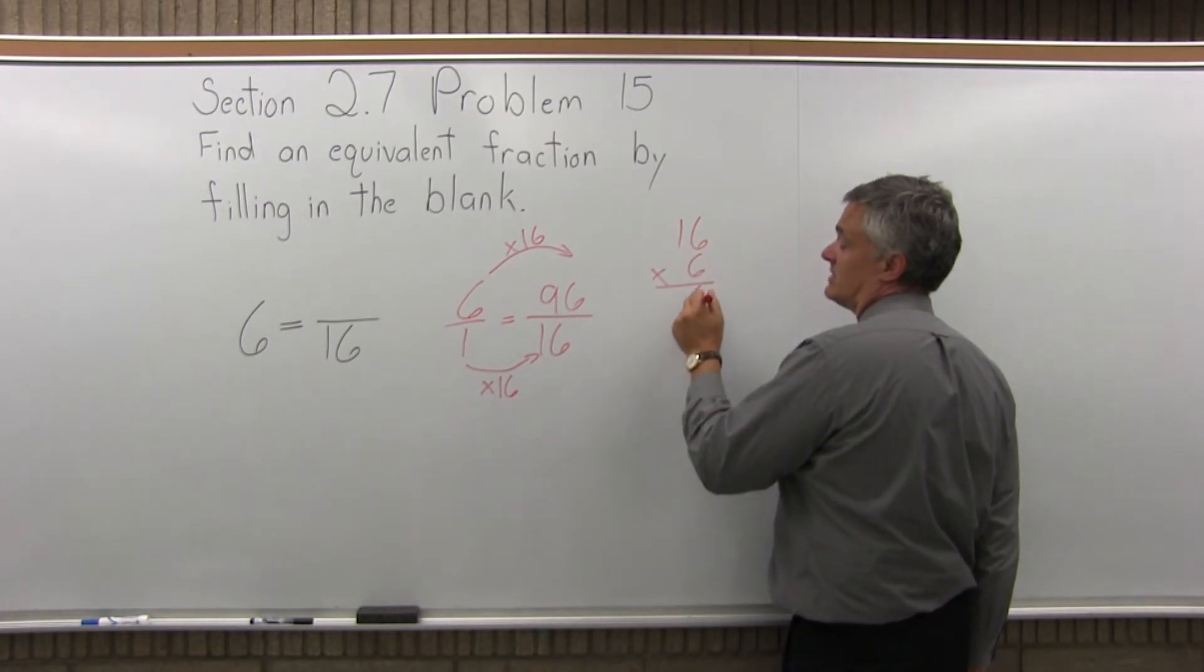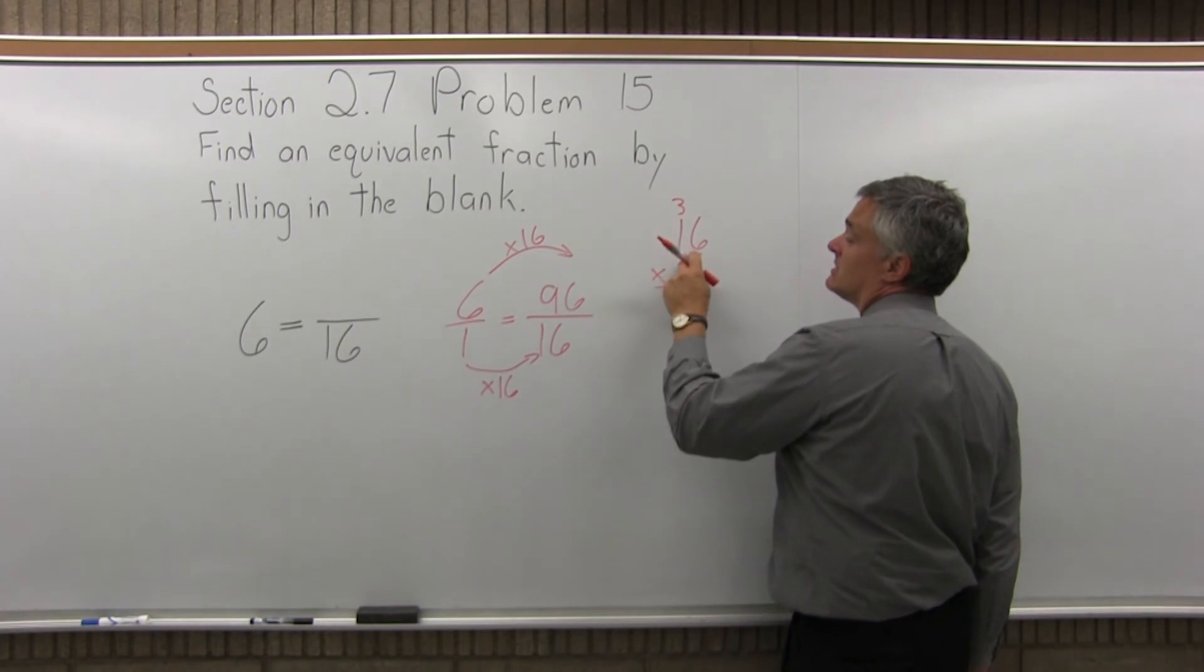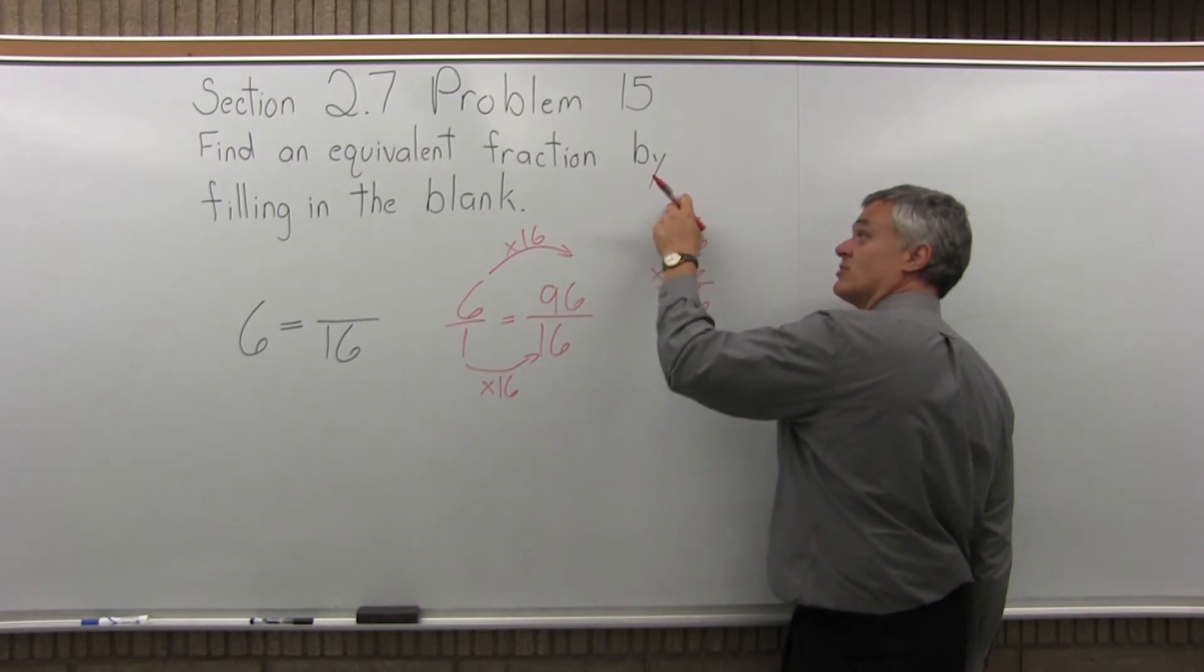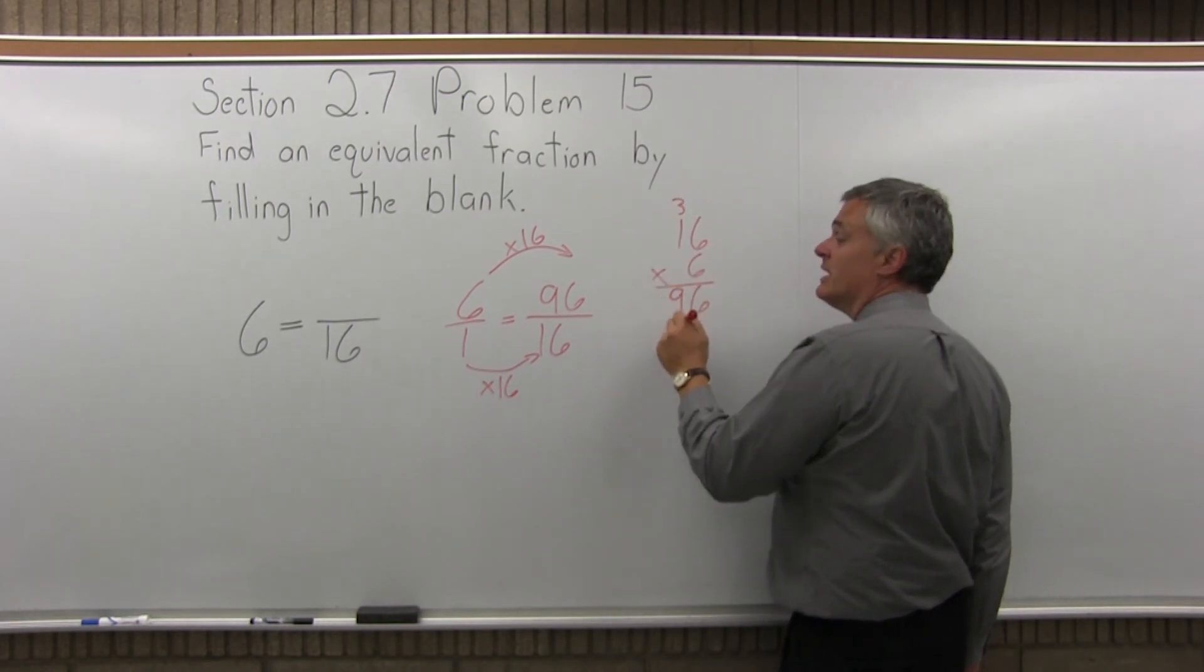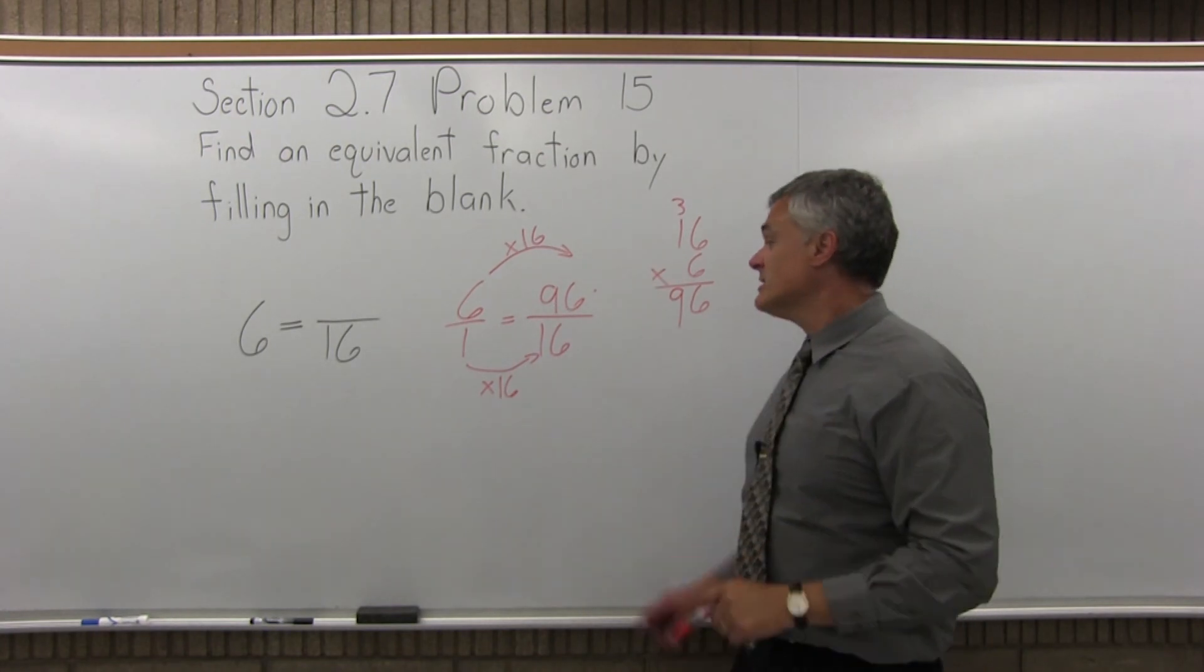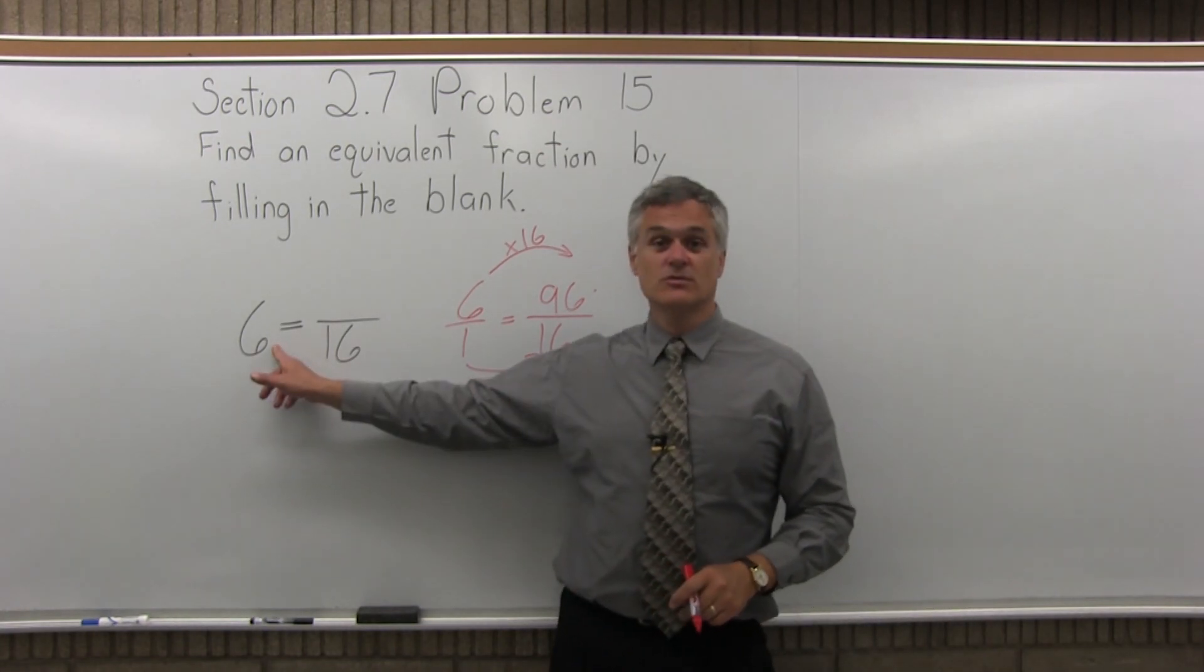So 6 times 6 is 36. Write the 6, carry the 3. 6 times 1 is 6, plus the 3 more that you carried, 6 plus 3 more. It is 96. So 96 over 16 is equivalent to just 6.